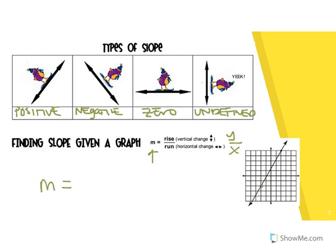I'm going to start here and count how many I'm going up. So I'm going to go up: 1, 2, 3, 4, 5, 6, 7. I'm going to mark that, and then go over to get to that point — 1, 2, 3, 4. So that was 4 to the right and 7 up. Since we went up and to the right, those are both positives, so I went 7 over 4. You always want to simplify your fraction if you can. There's no number that goes into both 7 and 4, so my slope is 7 fourths.